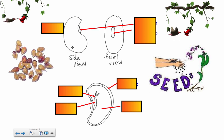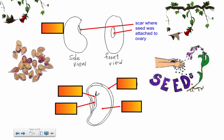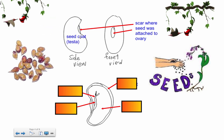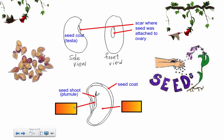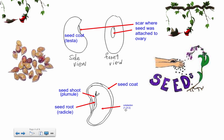Let's look at what an actual seed looks like - side view and front view. There's a scar, kind of like a belly button, left over from where it was attached to the ovary. The seed coat is called a testa. Inside the seed, this is what determines whether a plant is classified as a monocot or a dicot. The cotyledon - that's what 'cot' is short for - is the first leaves stored inside. They contain a lot of starch given by the parent plant, because the seed can't make its own glucose through photosynthesis yet since it doesn't have any leaves.